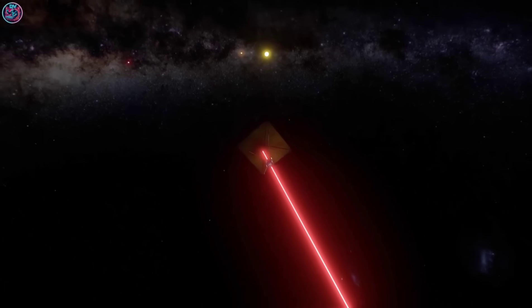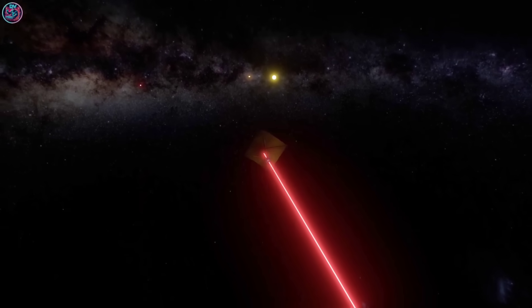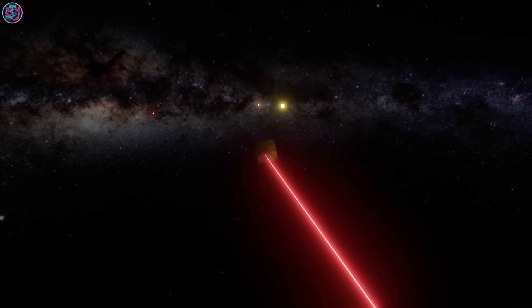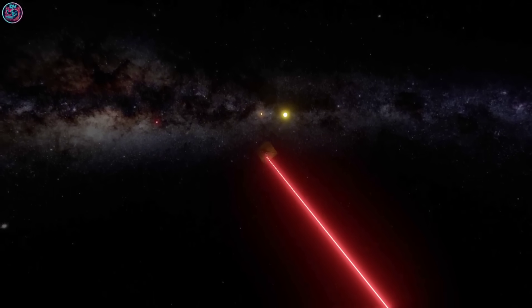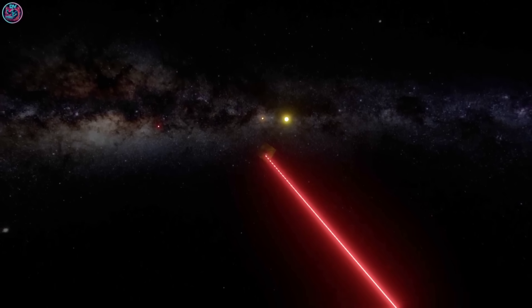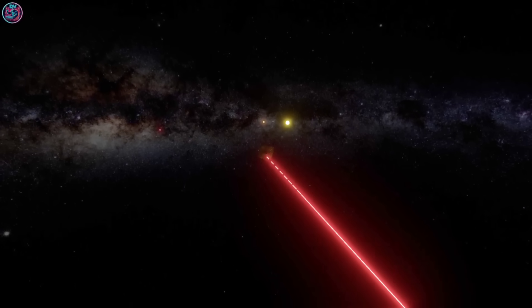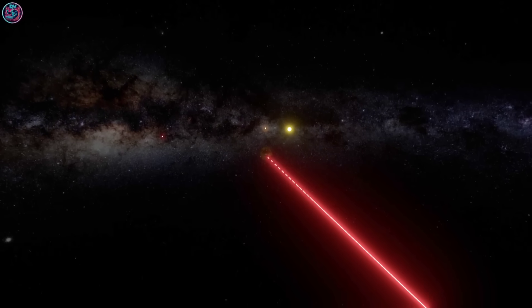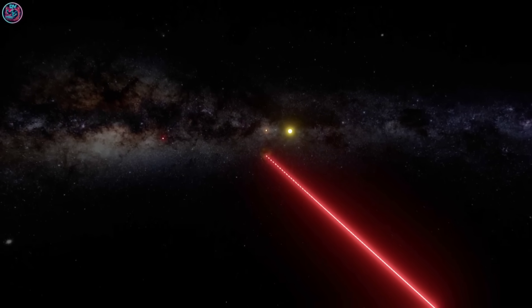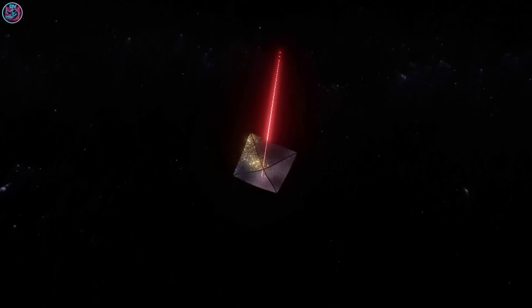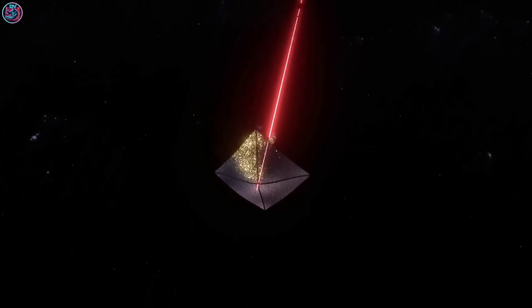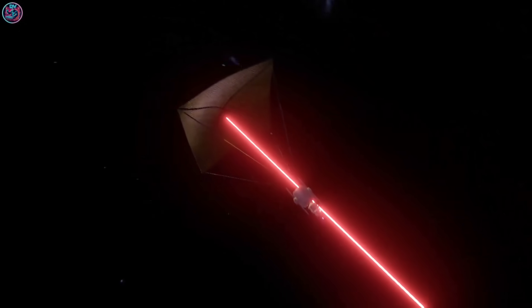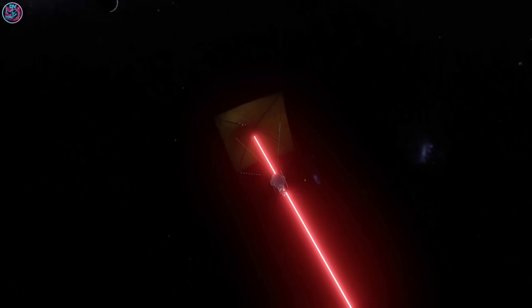Meaning that the closest star to our own is still more than two decades in the distance, even at this incredible speed. So it would seem that traveling at this velocity is the slowest that we could travel if we wanted to send an unmanned probe to Proxima Centauri in a reasonable amount of time. So how can these kinds of velocities be achieved, especially given the fact that traveling at this speed is still not really quite fast enough?